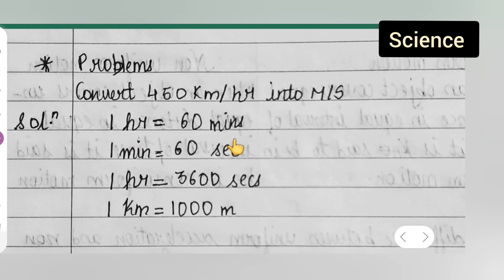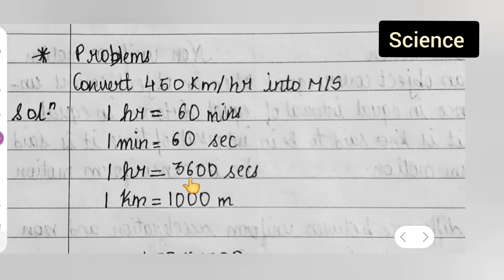Solution: 1 hour is equal to 60 minutes, 1 minute is equal to 60 seconds, 1 hour is equal to 3600 seconds. Because we have to multiply 60 twice, 60 multiplied by 60 will give you 3600. Now, 1 kilometer is equal to 1000 meter.